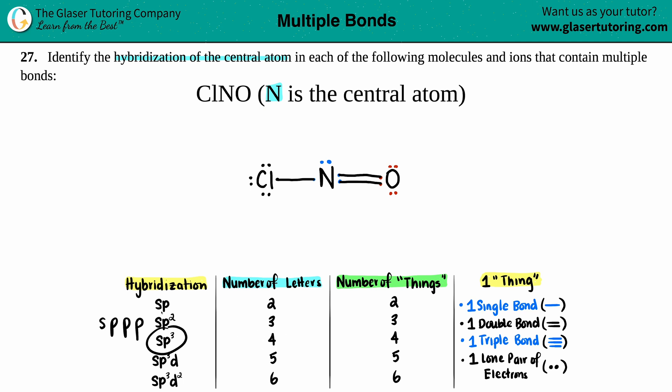The number of letters always corresponds to the number of things. If you've got three letters, you've got three things going around the atom. If you've got four letters, you've got four things going around the atom.